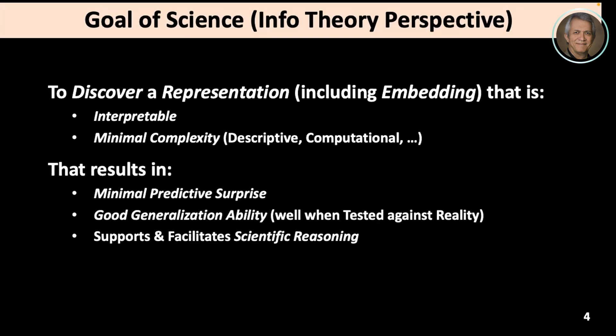The representation should have good generalization ability — when tested against reality, it performs well. This is an extension of the Kolmogorov-Chaitin idea that if you build a minimal description, it should generalize well. I want to add a third element: it supports and facilitates scientific reasoning. We want to use these things to help us learn about the system, but also to help us do science, discovery, and learn about the universe. That's my two-bit definition of the goal of science.